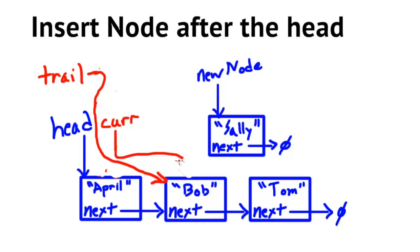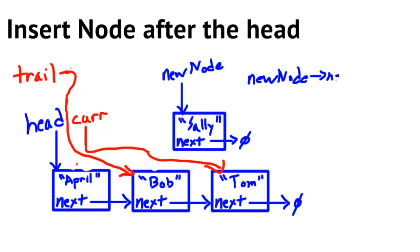Our current pointer is now pointing to Tom. When we do our comparison, we can see that Sally should come before what current is pointing to. That's okay because we have our trail pointer pointing to the previous node, Bob. We need to update new node's next to point to what current is pointing to: new node's next equals current.